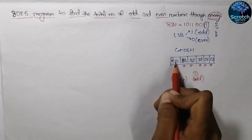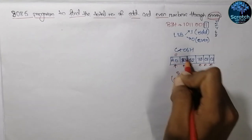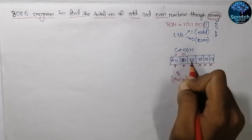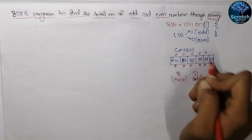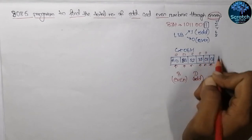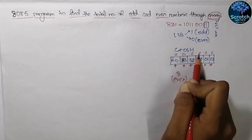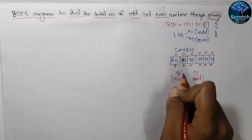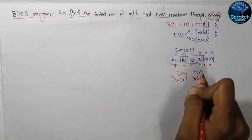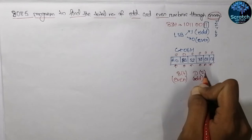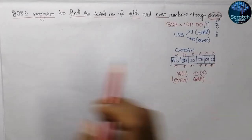In this example, A0 is an even number, B3 is odd, 52 is even, 7E is even, 01 is odd, and C2 is also even. So there are 4 even numbers — B will store 4 — and there are 2 odd numbers, which will be stored in register D. In this way we will do the operations.